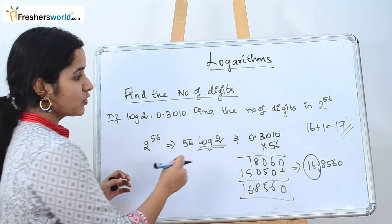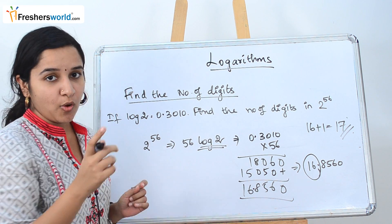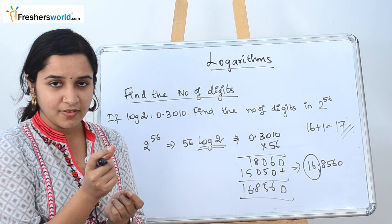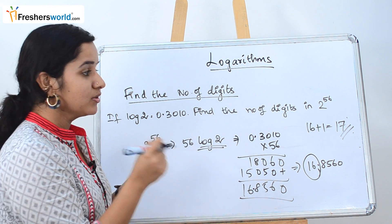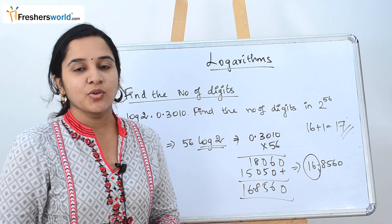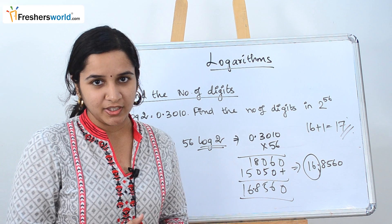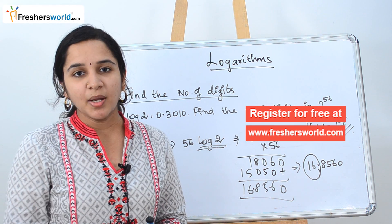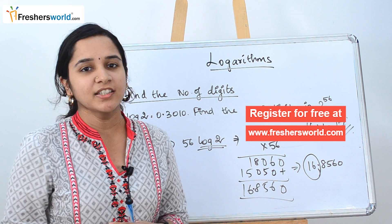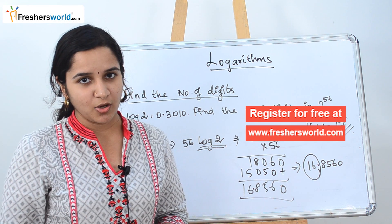So what we did here? We solved the given question, we found the answer. We take the characteristic value plus 1, which will give you the number of digits in the given question. So in today's video we dealt with two types of sums: one is to find the value of the sums, and as well as to find the number of digits. In the upcoming videos we will be solving various other types of problems which you may face in logarithms.